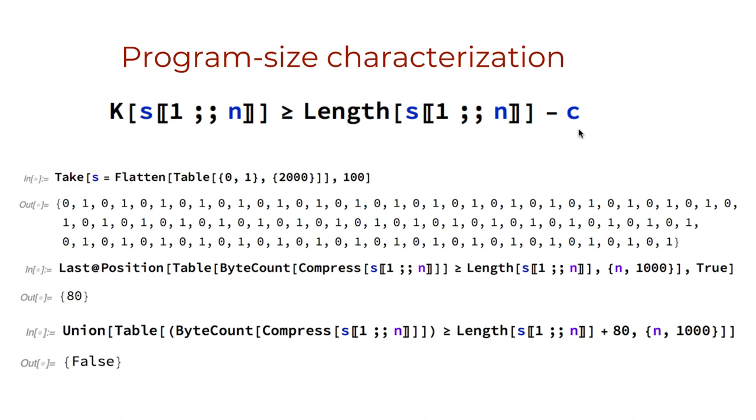This means, for example, that unlike for random strings, for non-random strings such as an alternating 0 and 1, 2000 times, one can find a constant that makes all initial segments to have low algorithmic complexity from one point on. From the initial segment number 80 on, for example, for this case, all compressed versions are shorter than the length of the initial segments themselves.